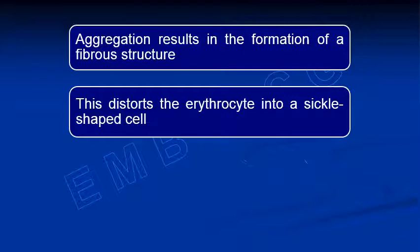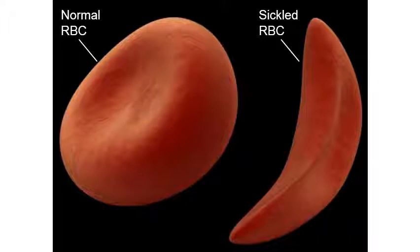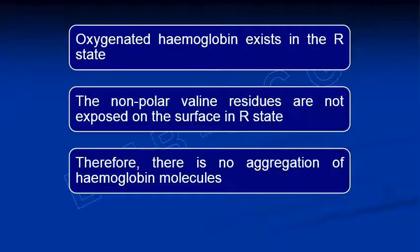The aggregation of hemoglobin S results in changes in the shape of RBCs — they become sickle-shaped, hence the name HbS and sickle cell disease. A normal RBC is biconcave, but in sickle cell disease the RBCs take on a sickle shape. When hemoglobin is in the oxygenated (relaxed) state, the nonpolar valine residues are not exposed on the surface, so there is no aggregation.